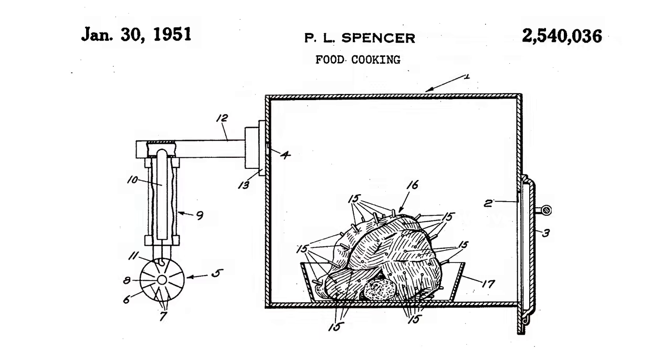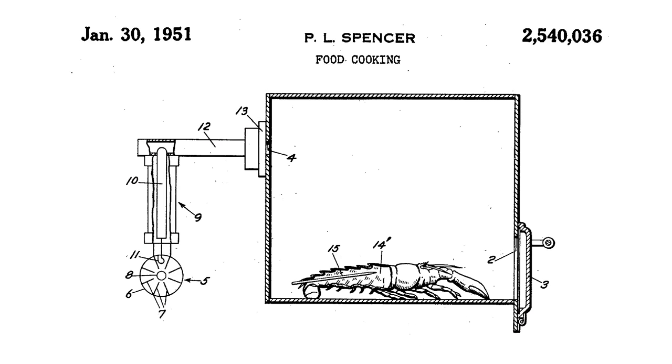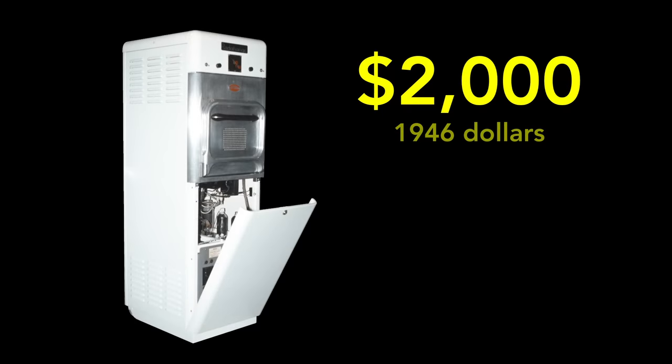The earliest patents show a whole roast, a complete turkey, and a lobster being cooked. And the first microwave oven, which appeared in 1946, was aimed at restaurants, which is a commercial, not a consumer use.